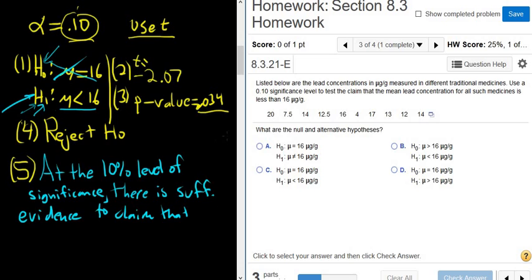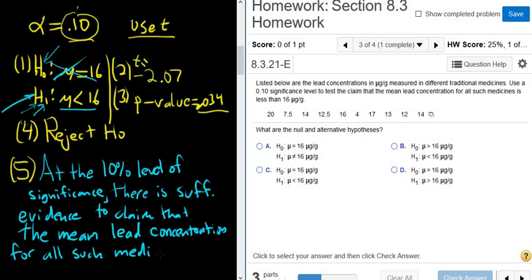We can do a little bit better by looking at the question. That the mean lead concentration, let's go there, that the last sentence, that the mean lead concentration for all such medicines is less than 16. And then we have these units here. I'll omit the units in this case.